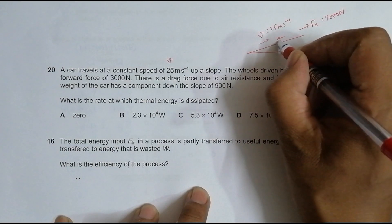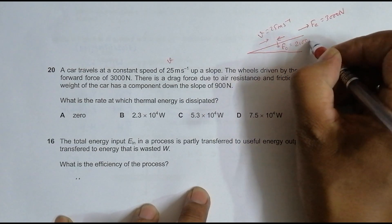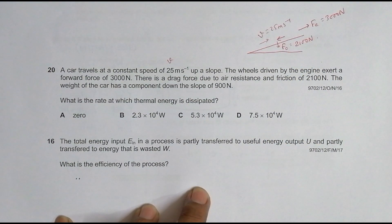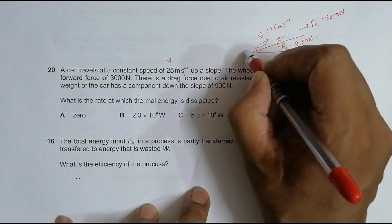So the drag force, or let us say F opposing, we call it F opposing, is equal to 2100 Newtons. The weight of the car has a component down the slope of 900 Newtons, so this is the weight component equal to 900 Newtons.